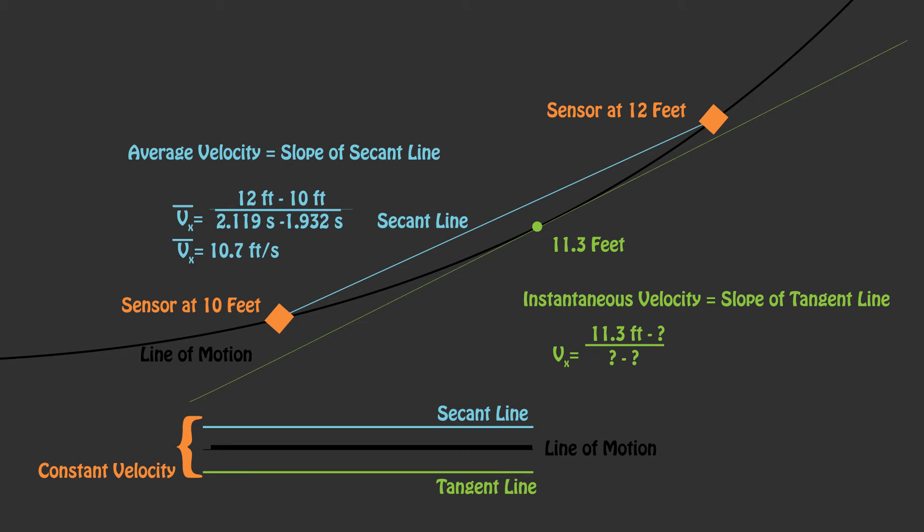The only time that your average velocity and your instantaneous velocity are equal is when you have a constant velocity, because this is represented by a straight line.